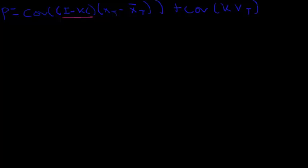Alright, I want to get right back to continuing with this derivation. This is where we left off in the last video: that p was equal to the covariance between (I minus KC) times (x_t minus x_bar_t) plus the covariance between K and v_t.